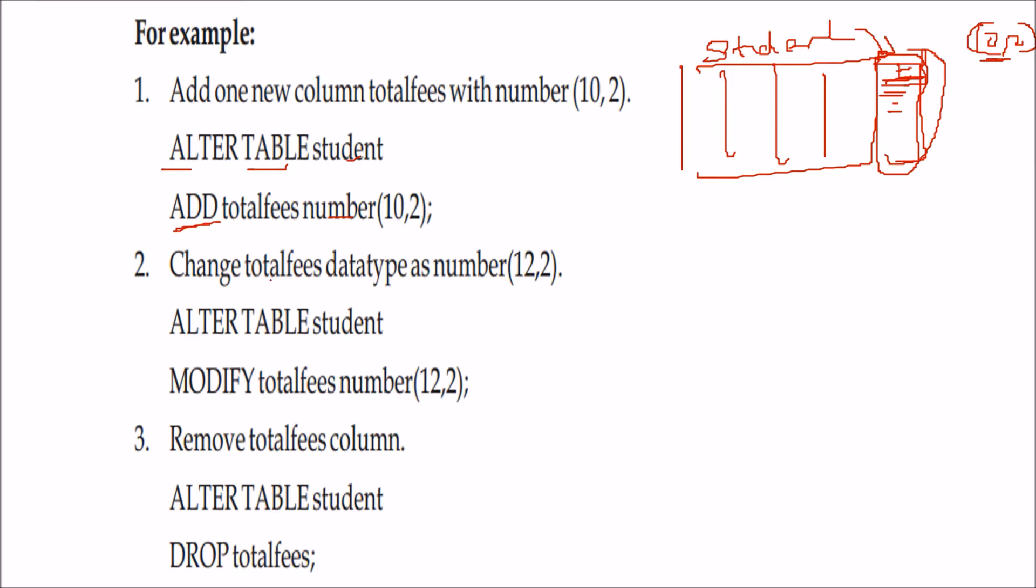Now if you want to change or modify, you have added here and you want to modify it. You have to change the totalfees data type as number(12,2). You want to change the precision. So what you are going to do here: ALTER TABLE student, MODIFY totalfees number(12,2). This precision will be changed.